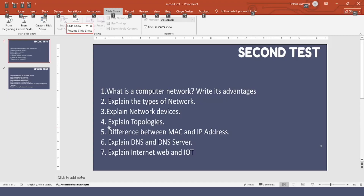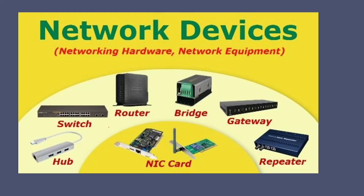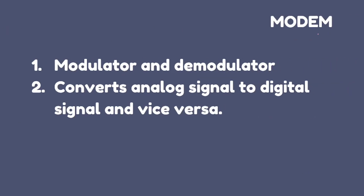For network devices, they may ask you to explain any five network devices in a five-marker question. Sometimes they will mention specific devices explicitly — like router, hub, switch, repeater — so you must explain everything. The first device is a modem. The full form is Modulator and Demodulator. It converts analog signal to digital signal and vice versa. You can mention an ethernet card as an example.